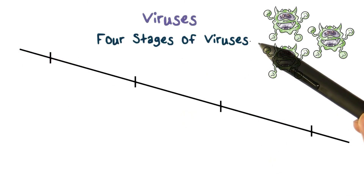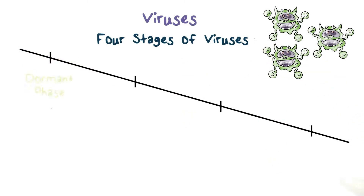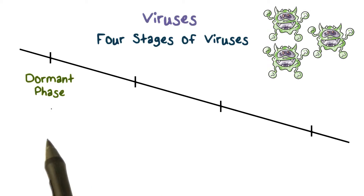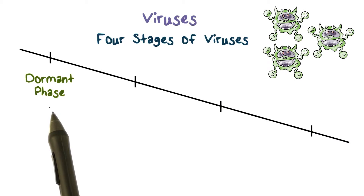There are four stages in the life cycle of a virus. The first is the dormant phase. This is the phase when a program has just been infected by a virus, but the program has not run yet, so the virus has not been triggered or spread.